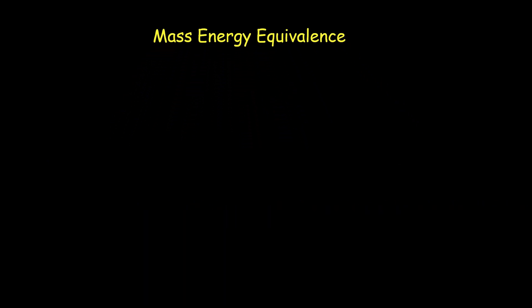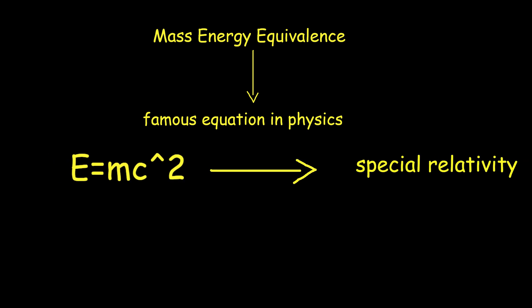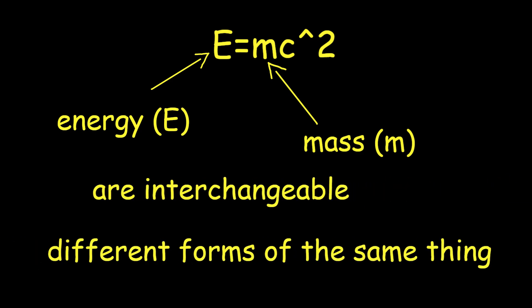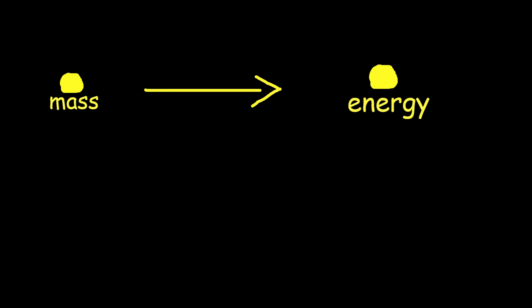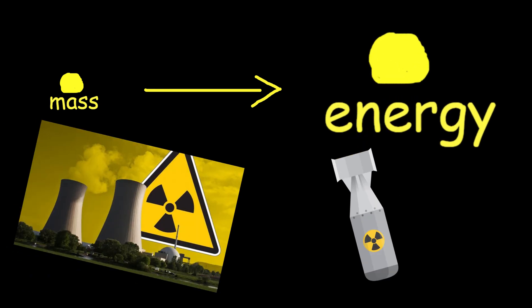Mass-energy equivalence: perhaps the most famous equation in physics, E=mc², arises from special relativity. It means that energy, E, and mass, M, are interchangeable — they are different forms of the same thing. A small amount of mass can be converted into a large amount of energy, which is the principle behind nuclear energy and atomic bombs.